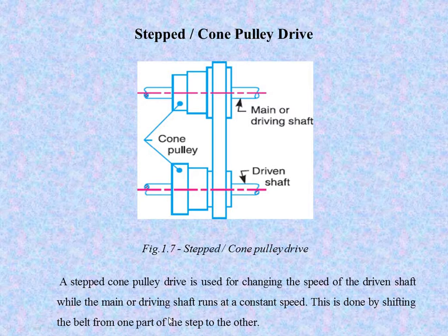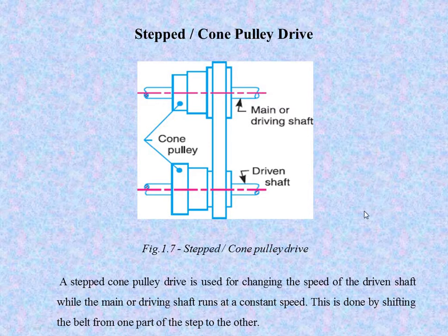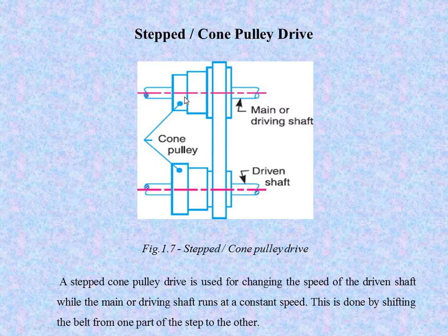We have seen the same concept in lathe machines. When turning in reverse direction, the speed must be minimum. To reduce the speed, we shift the belt from one step to another — that is the principle of the stepped or cone pulley drive.